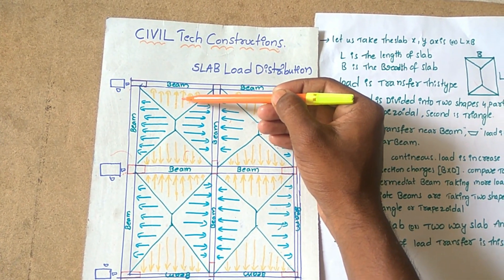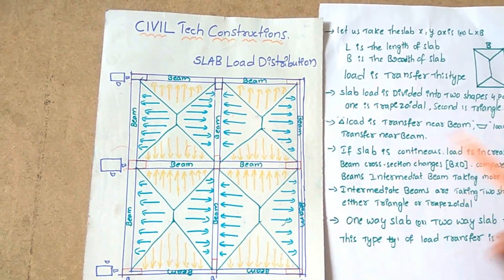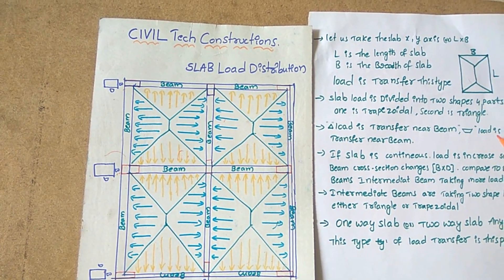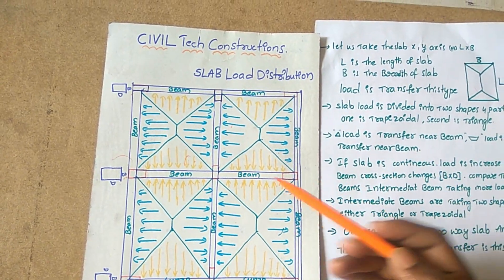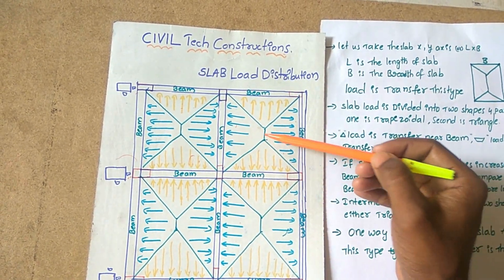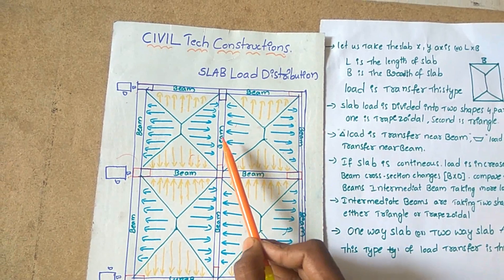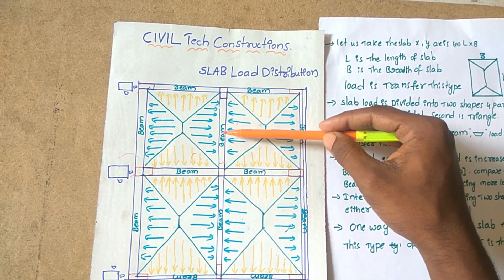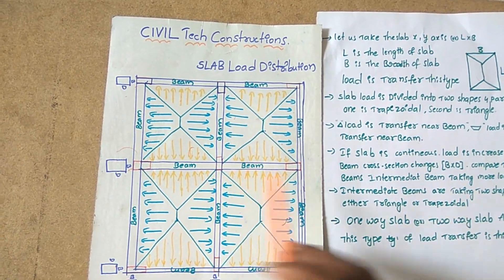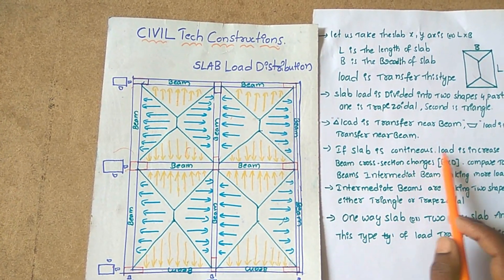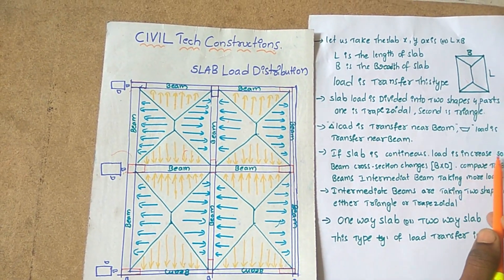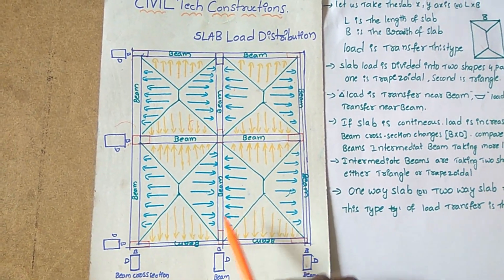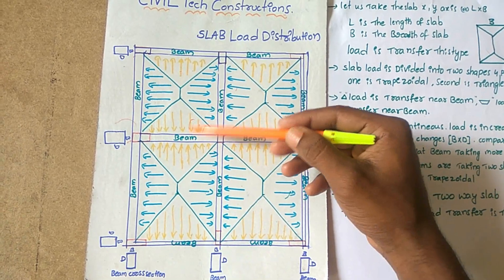This triangle load is transferred to this beam, and the trapezoidal load is transferred to the nearby beam. This trapezoidal load transfers to the near beam only. If the slab is continuous, the load is increased, so the beam cross-section is increased. So the slab is continuous.